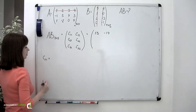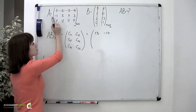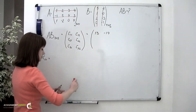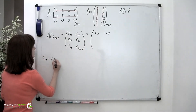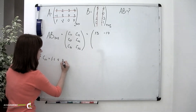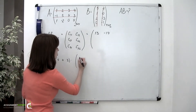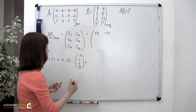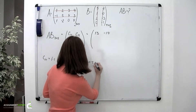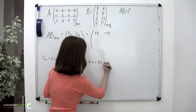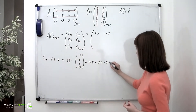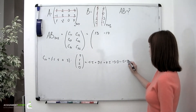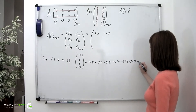C sub 2,1 is found by multiplying the elements of the second row of the first matrix and the first column of the second matrix. So we have negative 1, 5, 4, and 3, multiplied by the column 5, 1, 2, and 0. We obtain: negative 1 times 5, plus 5 times 1, plus 4 times 2, plus 3 times 0, which is negative 5 plus 5 plus 8 plus 0, which equals 8.